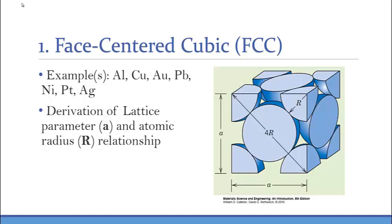The face-centered cubic is one of the common types of packaging for engineering metals. More specifically, the metals that have this FCC packaging include aluminum, copper, gold, lead, nickel, platinum, and silver.